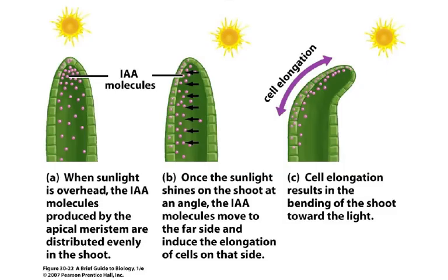The chemical name for auxin is IAA — indole acetic acid — so that may appear in a question. When sunlight is overhead, the IAA molecules produced by the apical meristem are distributed evenly in the shoot. But once sunlight shines on the shoot at an angle, the IAA molecules move to the far side and induce the elongation of cells on that side. Cell elongation results in the bending of the shoot towards light.